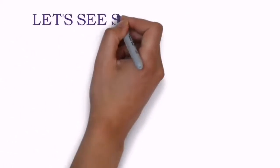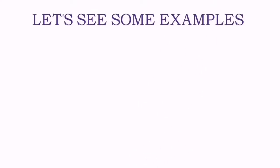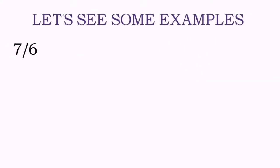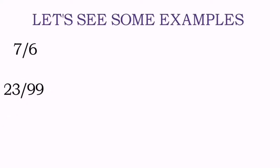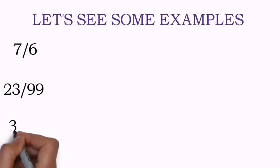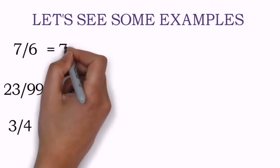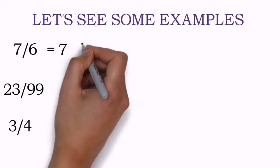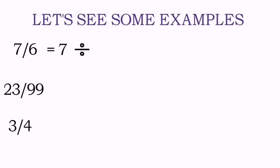Let's try to understand with some examples. Here some examples are on your screen. The very first is 7 upon 6, the second one is 23 upon 99, and the third one is 3 upon 4. These are rational numbers — let's try to write their division form.